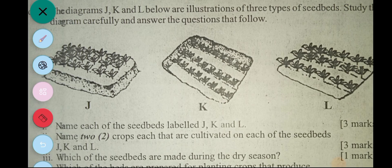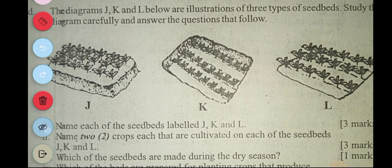So the diagrams J, K and L below are illustrations of three types of seed beds. Study the diagram carefully and answer the questions that follow. So J, you are asked to name J, K and L. J is a raised bed, K is a sunken bed, L is a flat bed.